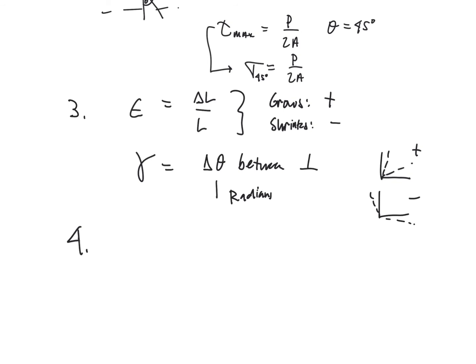Then we also have committed to memory the expressions for the one-dimensional constitutive law. By one-dimensional, I mean, if we have a normal stress and there's one normal strain, it is sigma is equal to E times epsilon. Then in the case of pure shear, we have tau is equal to G times gamma.